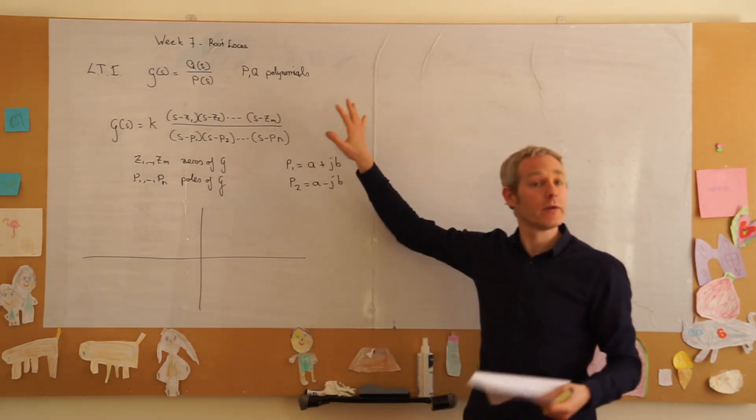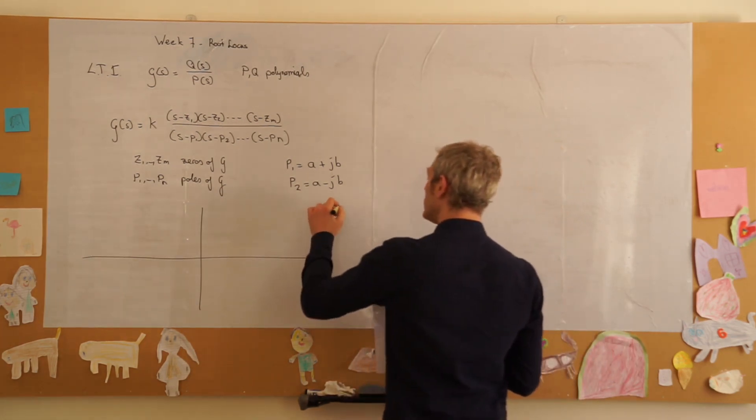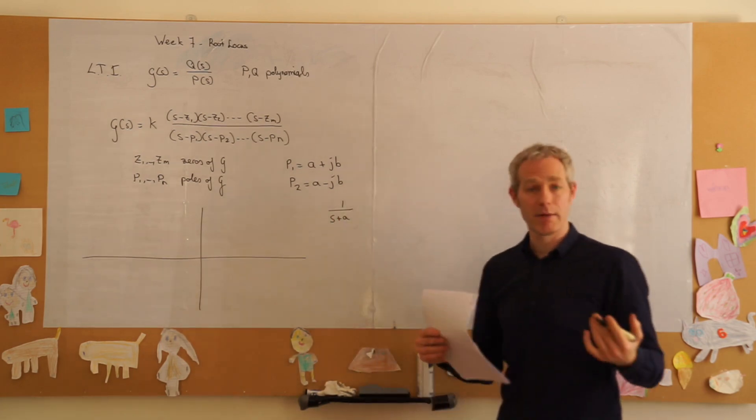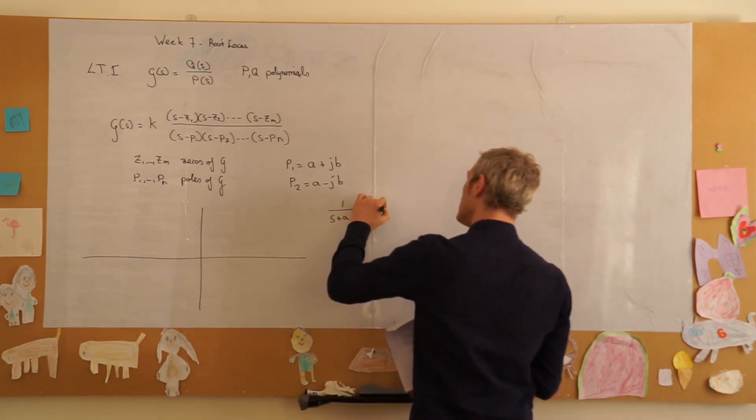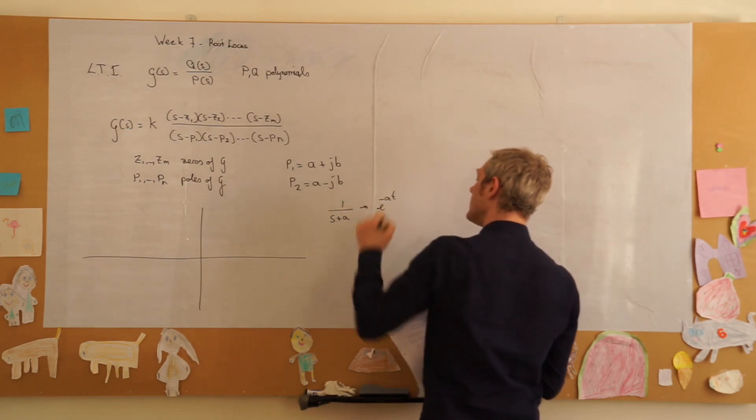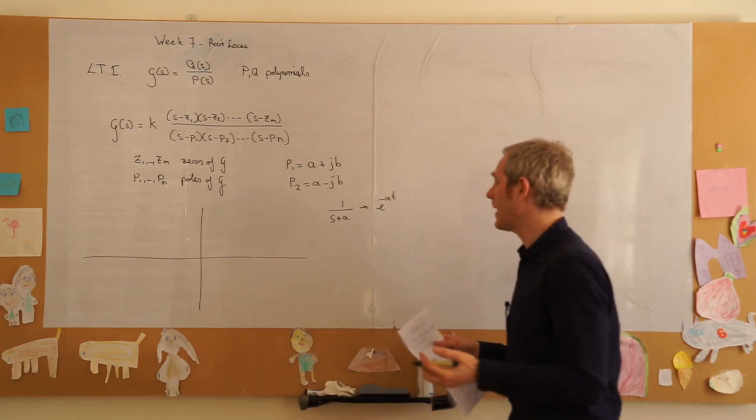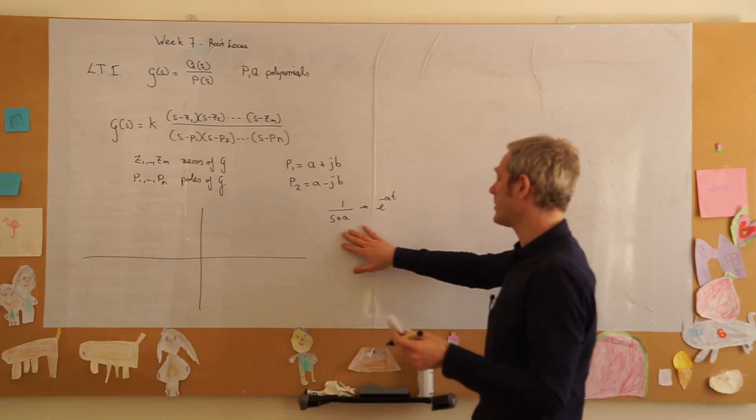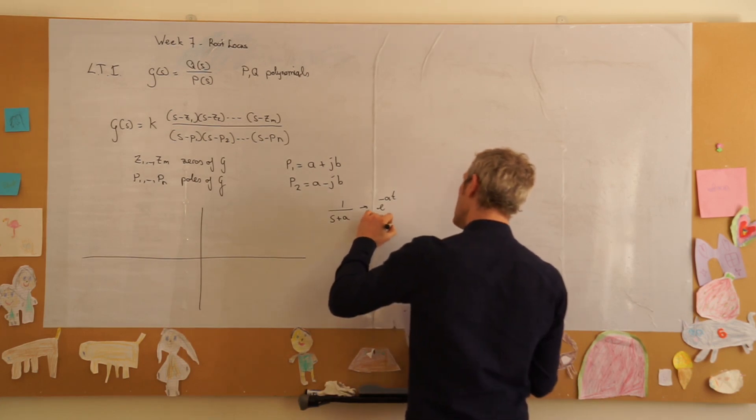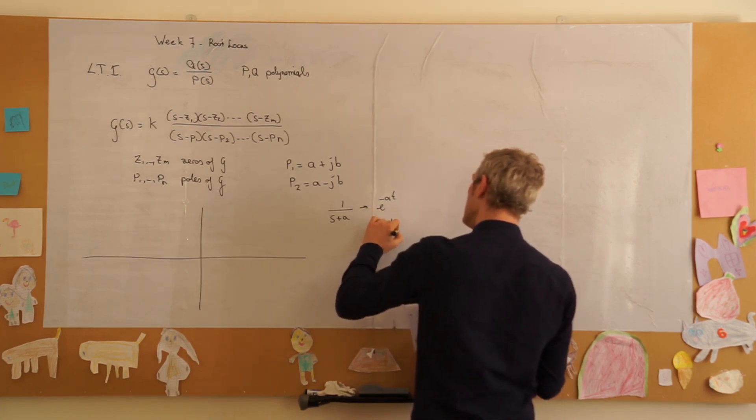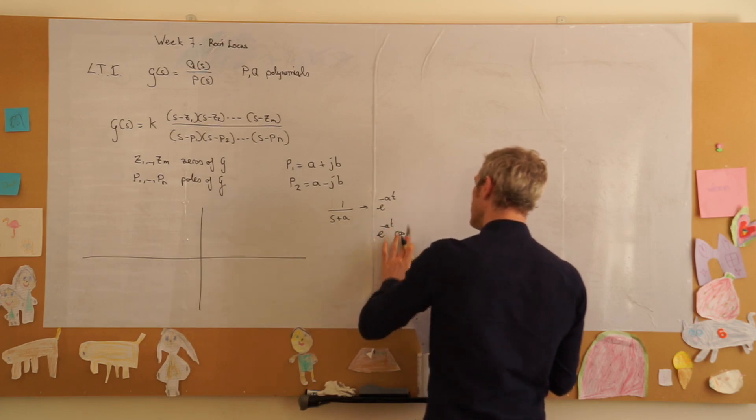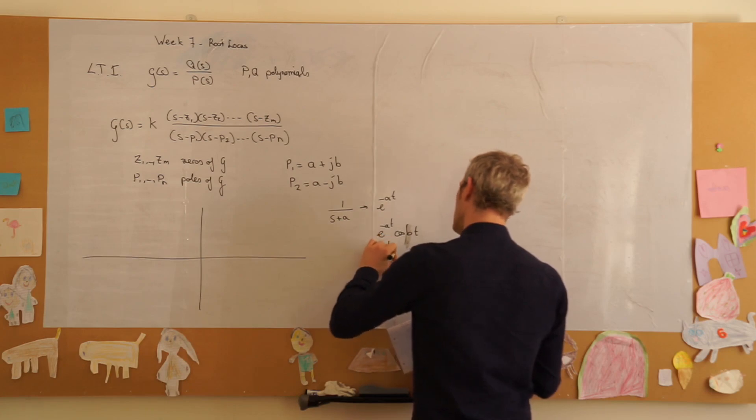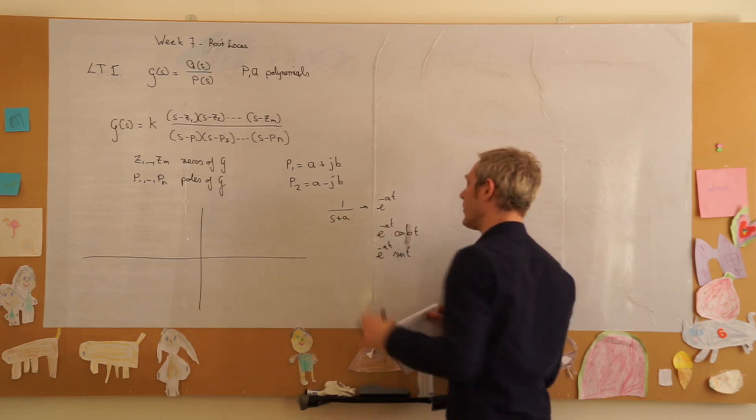All these fractions we've covered in previous weeks, and they all relate to something like 1 over s plus a, which in the Laplace domain translates to a time function, which is e to the minus at. And we also had our quadratic fractions where we get something of the form e to the power of minus at times the cosine of bt. And, of course, its partner e to the power of minus at sine bt.